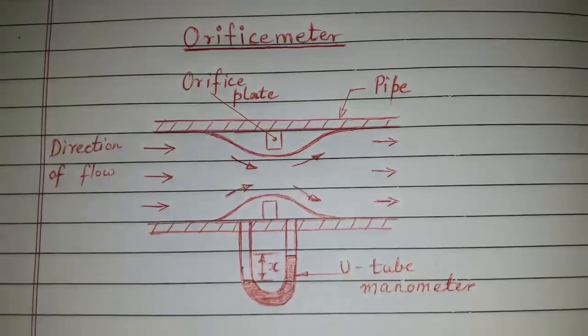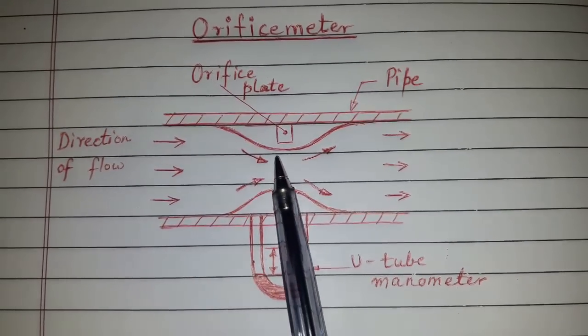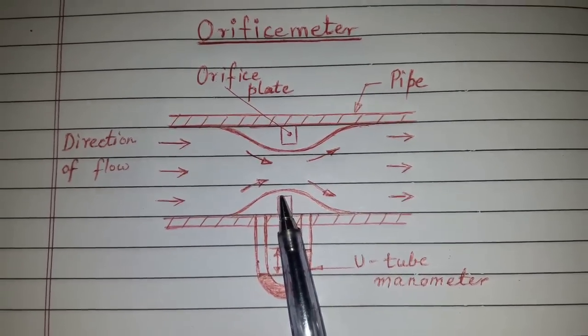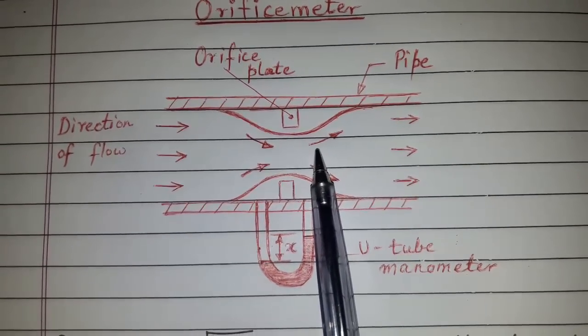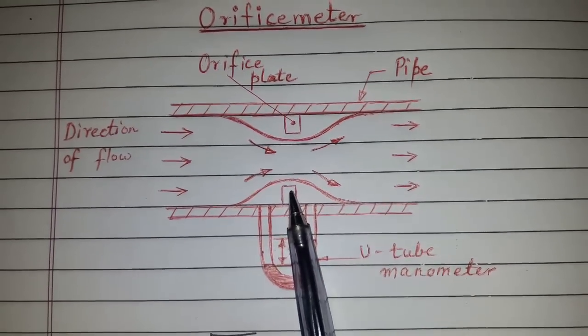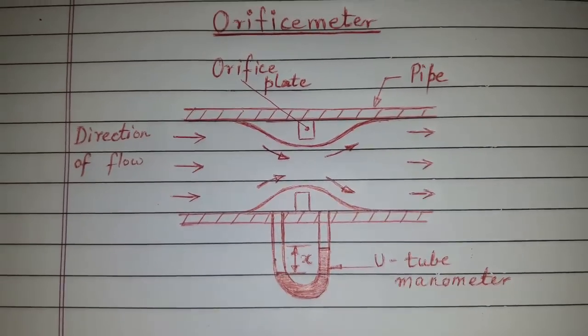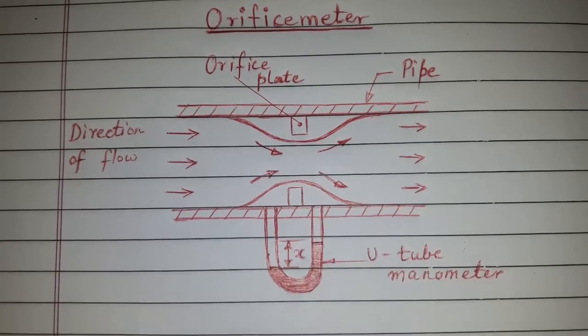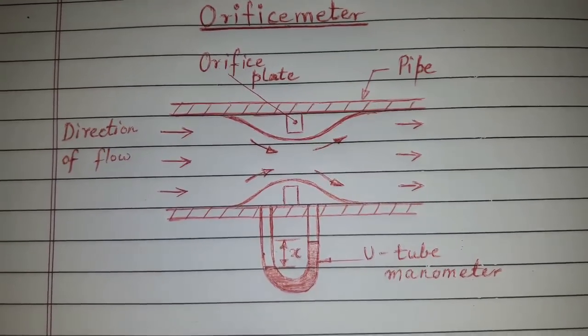Today's topic of discussion is orifice meter. It consists of a flat circular plate which has a sharp edge circular hole called orifice. The plate is fixed concentric to the pipe. The hole diameter can be 0.4 to 0.8 times the diameter of the pipe.